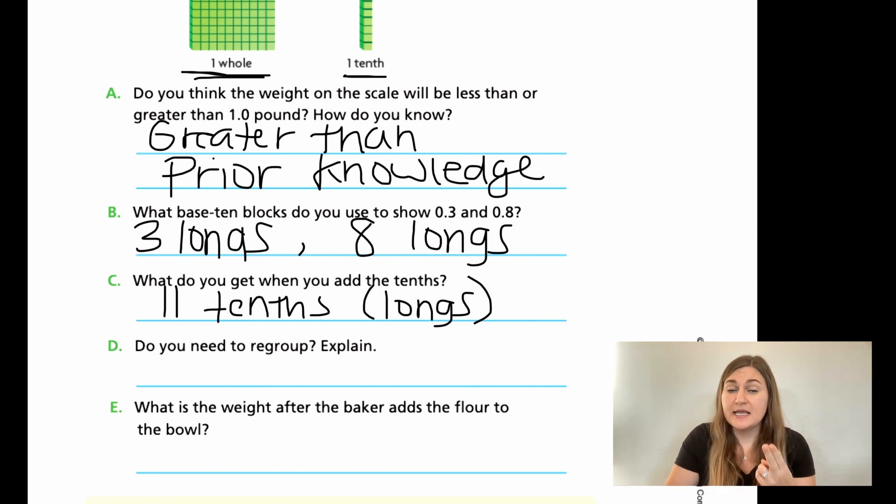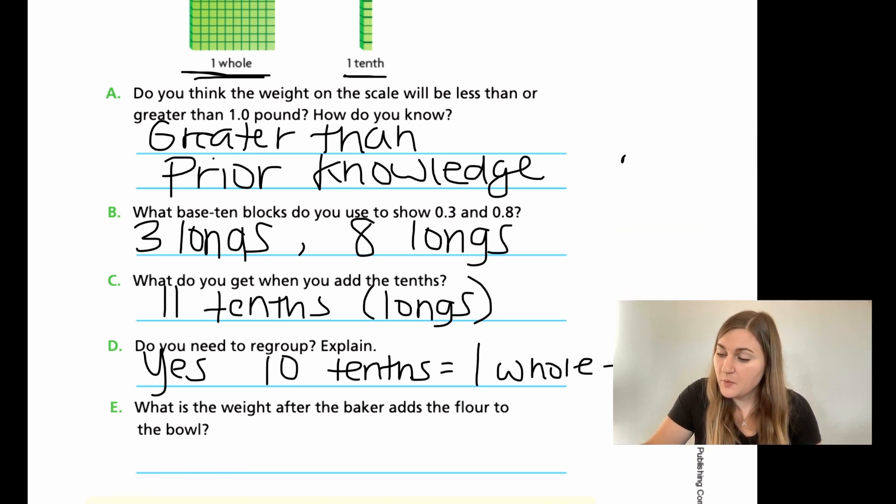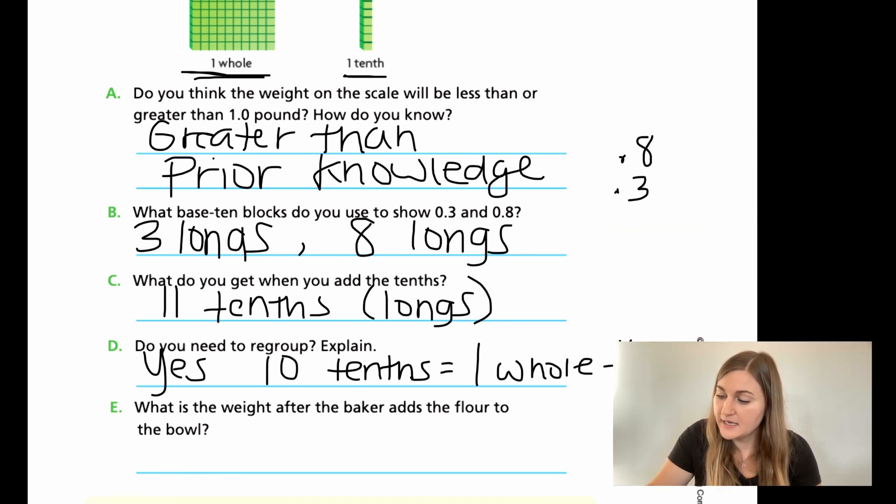Do we need to regroup? Yes, we can't have two digits in a place value, right? So when we have 11, we are going to be bumping up into the next number. So yes, we do need to regroup because 10 of those tenths are going to be equal to one whole. We know that because that's 10 over 10 and that equals one. All right, so for E, what is the weight after the baker adds the flour? Well, if I do it just the standard way and I put 0.8 and 0.3 and I add them together, I know I'm going to have one here. And then when I carry over, I'm going to have one here. But remember that place value drops right in between them. So it is going to be 1.1 pounds.